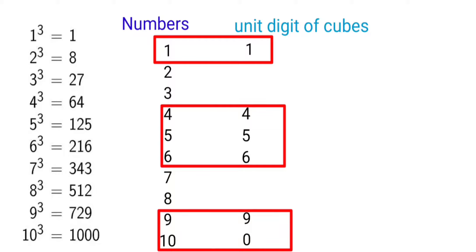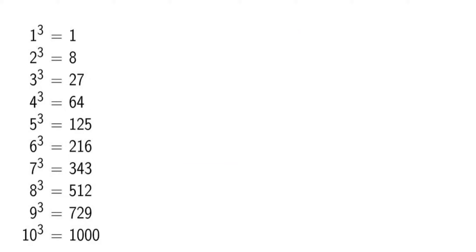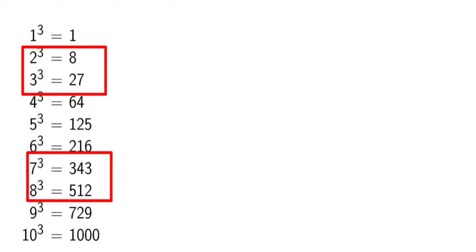Whereas the unit digit of cube of 2 and 3 are 8 and 7 respectively, and the unit digit of cube of 7 and 8 are 3 and 2 respectively. So the formula to remember: the unit digit of cube of 1, 4, 5, 6, 9, and 0 remains the same, but in other cases like 2, 3, 7, and 8, the unit digit is different.